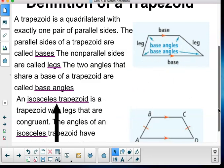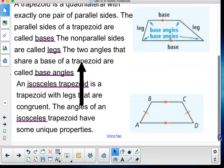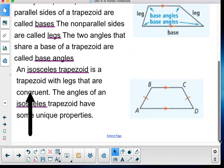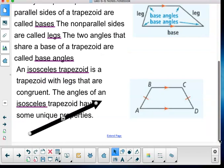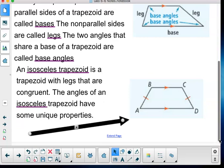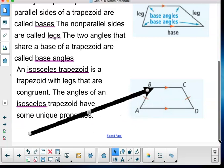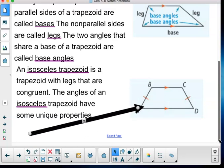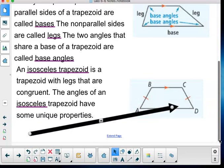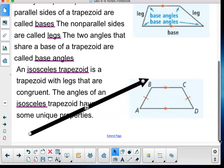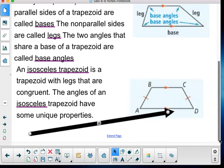An isosceles trapezoid is a trapezoid with legs that are congruent. This is just all about a regular trapezoid up there. So an isosceles trapezoid is a trapezoid with legs that are congruent. Now, the angles of an isosceles trapezoid have some unique properties. These angles here are still supplementary, but in an isosceles trapezoid, these have something special and so do these. Remember, it's isosceles because the legs are the same.